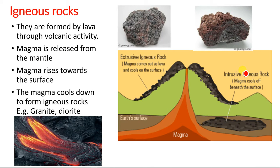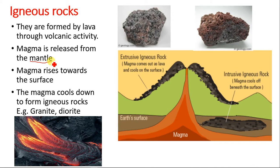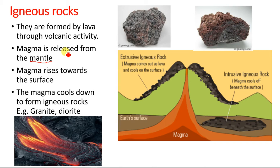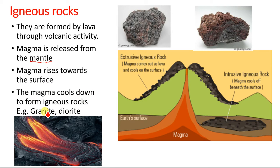Igneous rocks are formed by lava through volcanic activities. Magma is released from the mantle — if you need to know how that process works, you can watch my geography video on plate tectonics, which explains constructive and destructive plate boundaries and how they lead to volcanic eruption. Once magma is released, it rises to the surface, cools down, and forms igneous rocks such as granite.